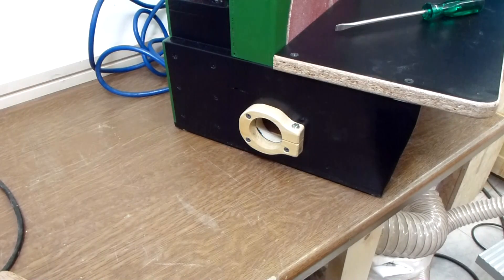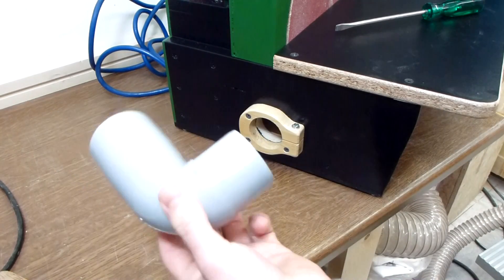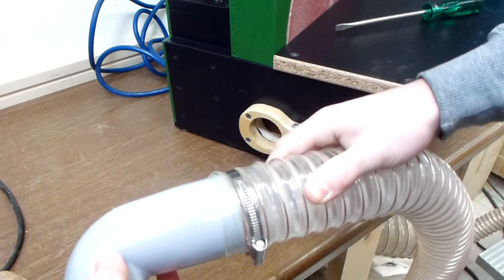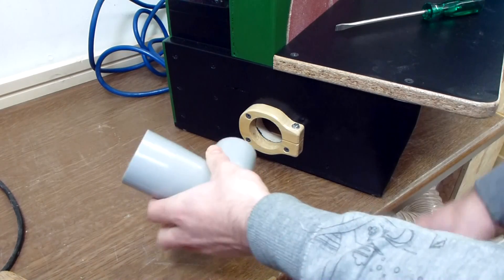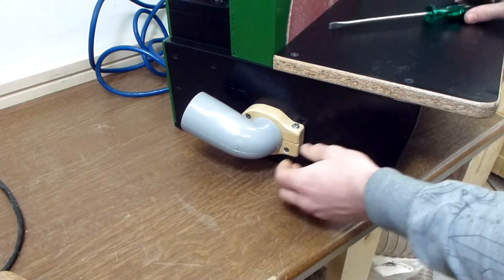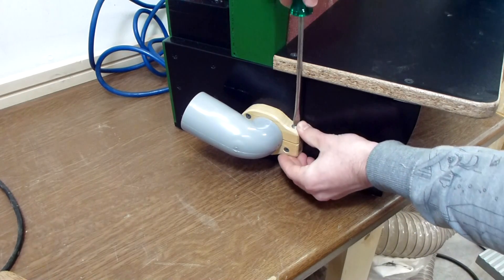So the last thing the sander needs is the connection to the dust collection system. I have this 90 degree elbow here, and this fits my hose. And the other end fits into the hole. And I made a little clamp at the side, and this holds it in place.